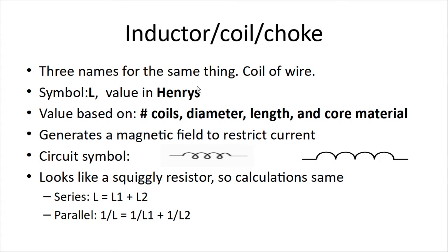Now, inductors. They're also called coils. They're also called chokes. And you'll see all three names in the test, just to confuse you. It's a coil of wire. It has a symbol L, and its value is in Henrys. The value of the inductance in Henrys is based on the number of coils, or the number of times it wraps around, the diameter of the coil, the length, and the core material, what they put inside the coils.